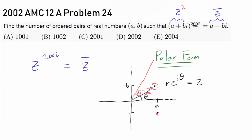Does that mean this is impossible? No. Let's think about another case: say the radius is 1/2. When you do Z squared, we go around another θ, but the radius shrinks to 1/4. With Z cubed, we go around another θ but get even closer to the origin — 1/2 cubed, or 1/8. As we rotate 2002 times, our point gets closer and closer to the origin, so it can't remain the same distance away. R = 1/2 does not work.